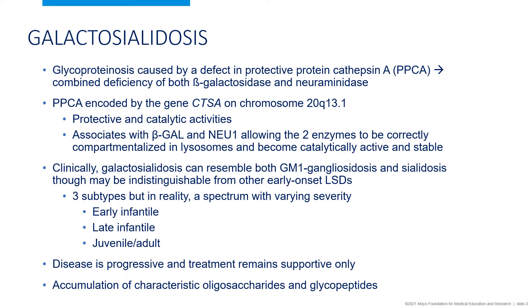Galactosialidosis is caused by the deficiency of a multifunctional enzyme called protective protein cathepsin A. PPCA forms a complex with beta-galactosidase and neuraminidase to break down oligosaccharides, which is essential for the functioning of both. When PPCA is inactive, so are these two enzymes.